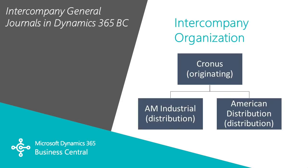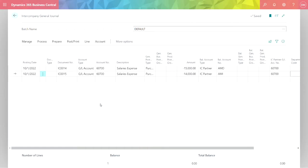For this demonstration, I'm going to use this intercompany organization. I've got three entities and they're all in Business Central. I'm going to show you an intercompany general journal from the originating company, Cronus, to each of the distribution companies.